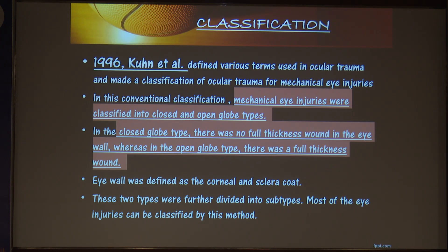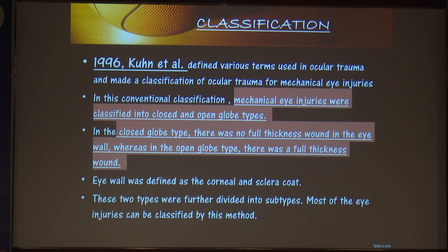The old classification, which was established in 1996 by Kuhn et al., classified mechanical injuries into closed and open globe injuries. In closed globe injuries there was no full thickness wound, whereas in open globe injuries there was a full thickness wound, with certain terminologies ascribed to each.